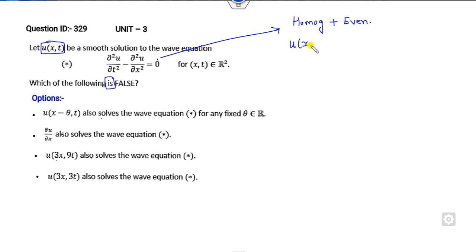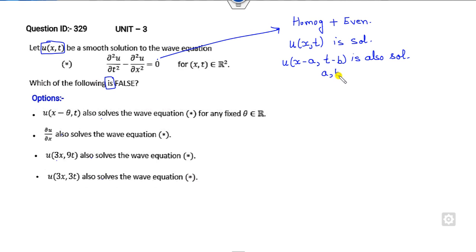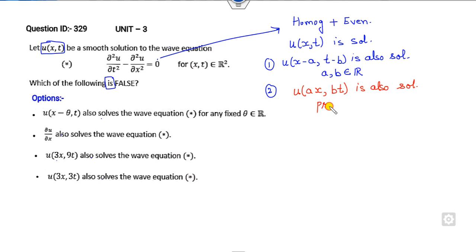Remember this property for the wave equation. If u is the solution, then u(x minus a, t minus b) is also a solution for all a, b belonging to the real numbers — that is the first property. The second rule is: u(ax, bt) is also a solution, provided a and b are equal. In the first property, a and b can be different or the same, but in the second case, they must always be equal.